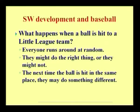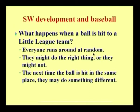How do we compare software development with baseball? We initially consider three different constraints. The first constraint is what happens when a ball is hit to a little league team. If the ball hits a little league team, there are so many reasons that might arise. Everyone runs at it at random. They might do the right thing or they might not. The next time the ball is hit in the same place, they may do something different.